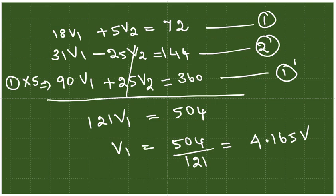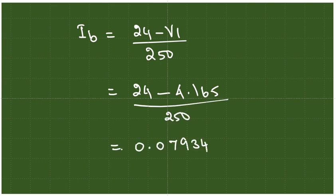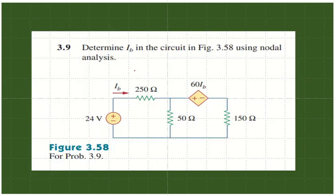But the question is to find Ib. In this we can substitute the value of V1, which is 4.165, divided by 250. That gives the value 0.07934 amps, or we can write this Ib as 79.34 milliamps. So this is our answer. Ib equals 79.34 milliamps. Thank you.